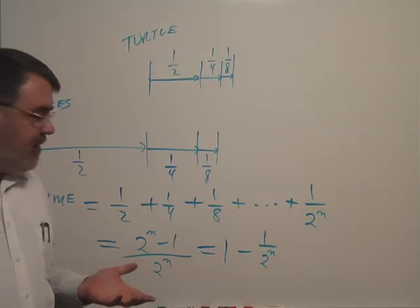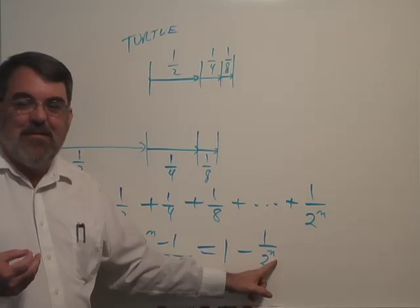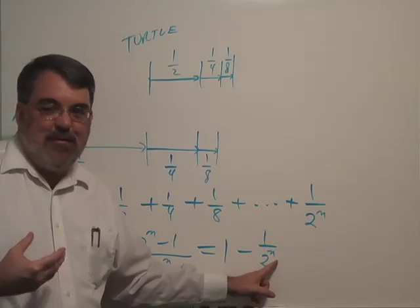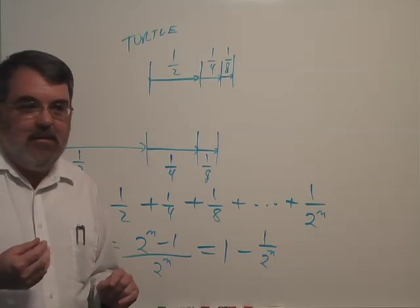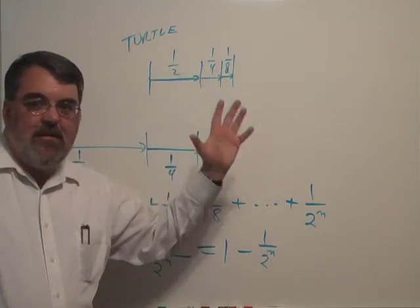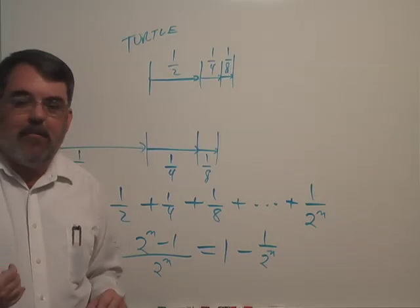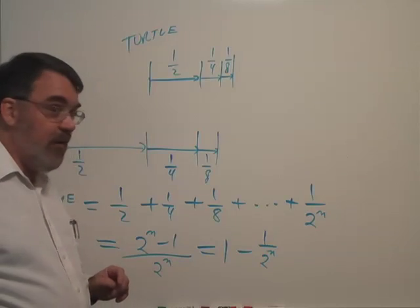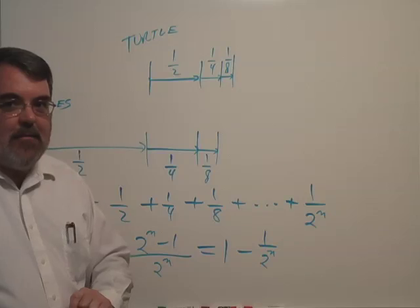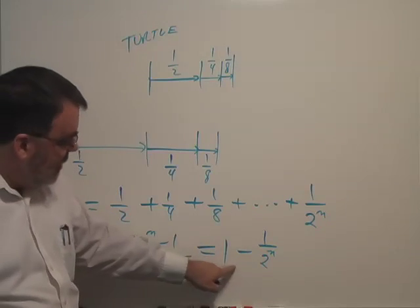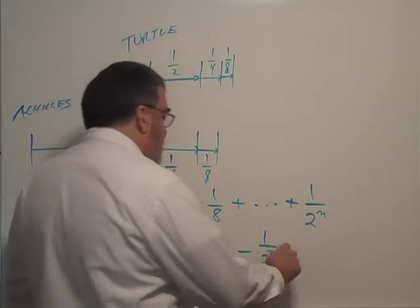But look what happens. No matter how large n gets, and now we're getting to the essence of infinity and infinitesimal as mathematicians view it. No matter how large n gets, when n grows infinitely large, now we're talking infinity, as we go toward an infinite number of stages of this trip. It doesn't matter how large n is,